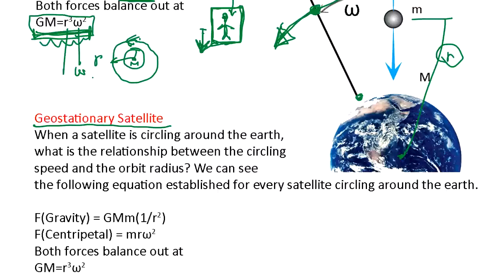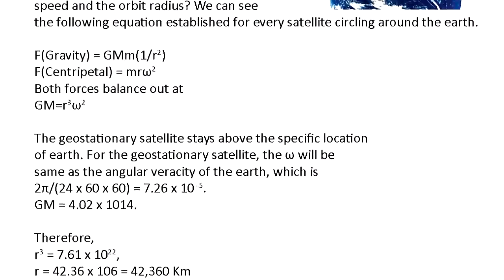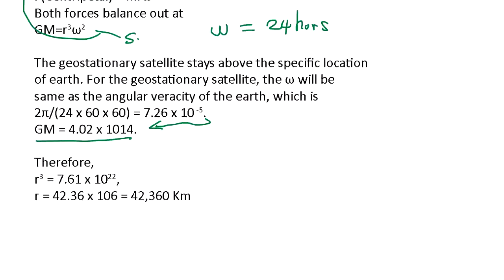So in order to satisfy this condition, this is the condition to be a satellite, and angular speed we calculate: 24 hours per circle. So we plug in this, then we get this. So we can calculate the distance: 42,000 kilometers.